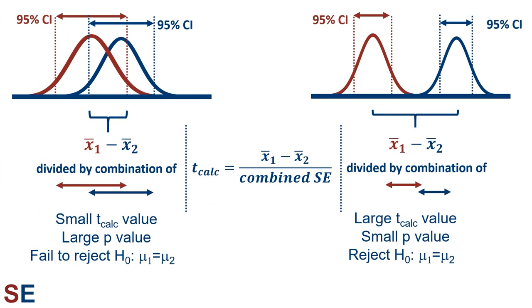To summarize everything with a couple of figures: on the left illustrates a case in which two populations have equal means, in which case the confidence intervals obtained from their samples would overlap. The difference between the sample means divided by a combination of those confidence intervals — which is essentially what our t-calculated equation is doing — would give us a small t-value. The small t-value would end up in the middle of the t-probability distribution and result in a large p-value, so we would fail to reject our null hypothesis of equal population means. On the right illustrates a case in which two populations have different means, in which case the confidence intervals would not overlap. This would give us a large t-value that ends up on the edge of the t-probability distribution, resulting in a small p-value, so we would reject our null hypothesis of equal population means, correctly concluding that the population means are different.